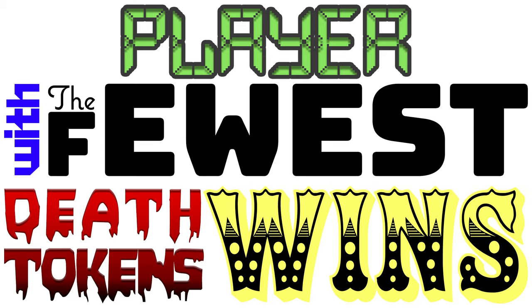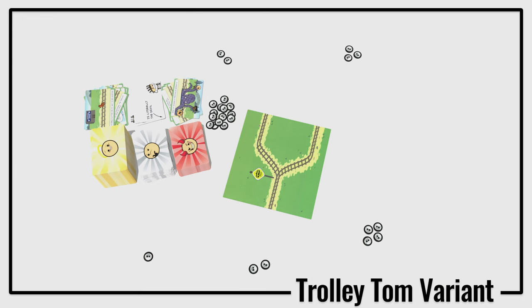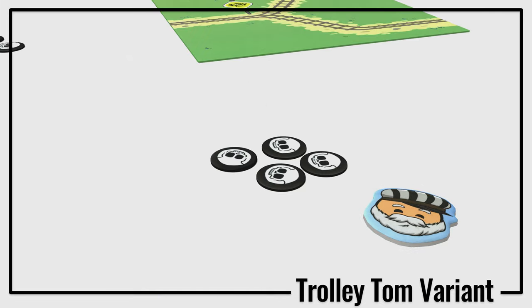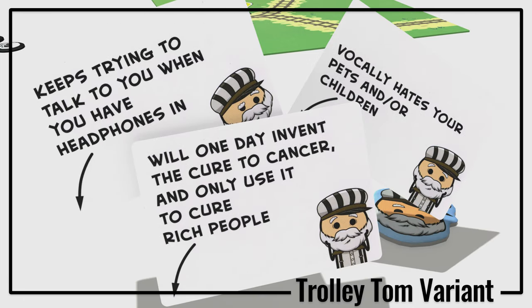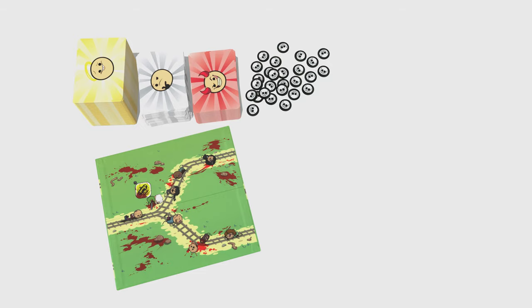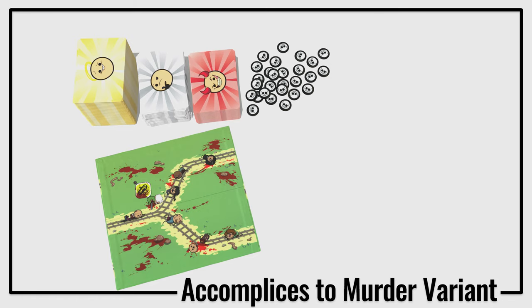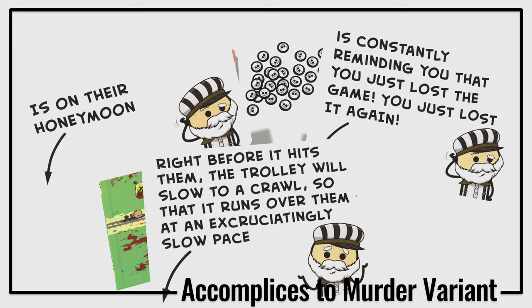There are a couple of variants of this game. The first is Trolley Tom. With the Trolley Tom variant, Tom is here to help lend a hand. Give the Trolley Tom token or miniature to the player with the most death tokens at the start of each round. Whoever has the token draws three additional modifier cards during step one and may play one additional modifier card during step five. The second variant is accomplices to murder. If you want even more modifiers in your game, give every player three modifier cards during step one and play one of them during step five. This will make the game longer, like golf.